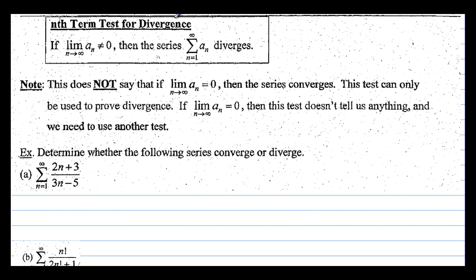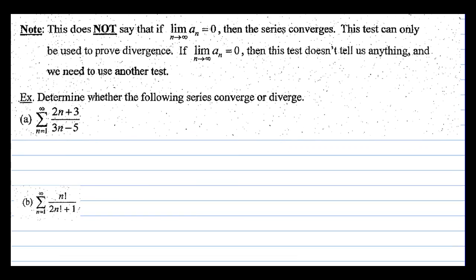The nth term test for divergence: if the limit as n approaches infinity of a sub n does not equal 0, then the series diverges. Note: this does not say that if the limit equals 0, then the series converges — it does not say that. This test can only prove divergence. If the limit equals 0, we need to use another test.